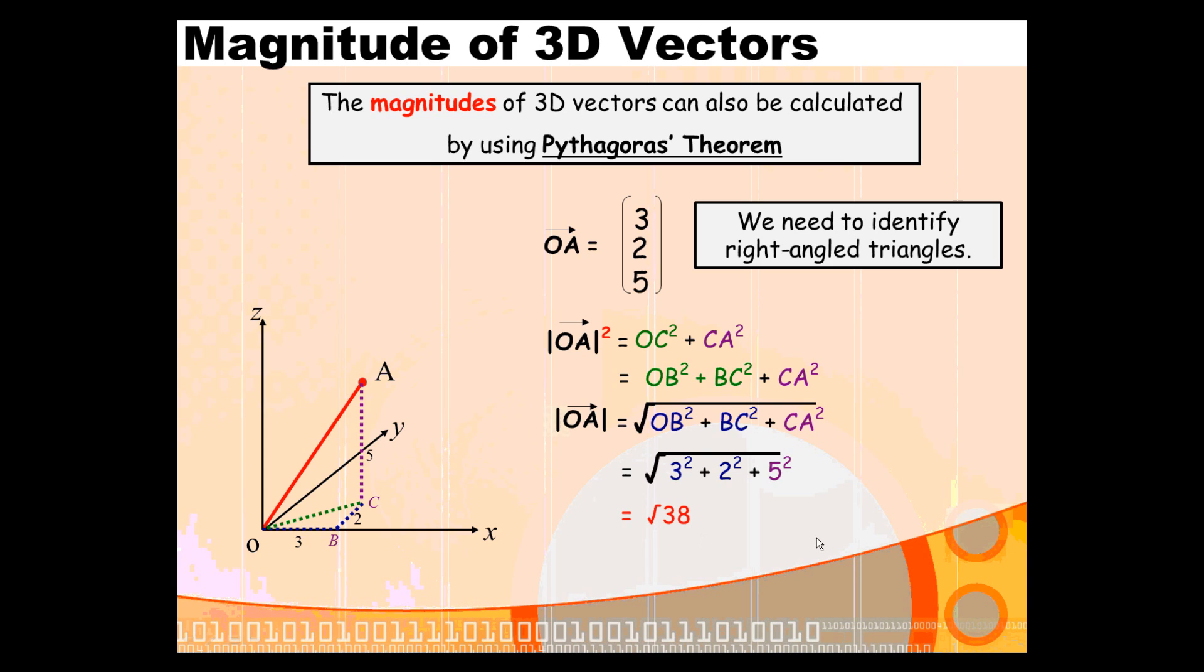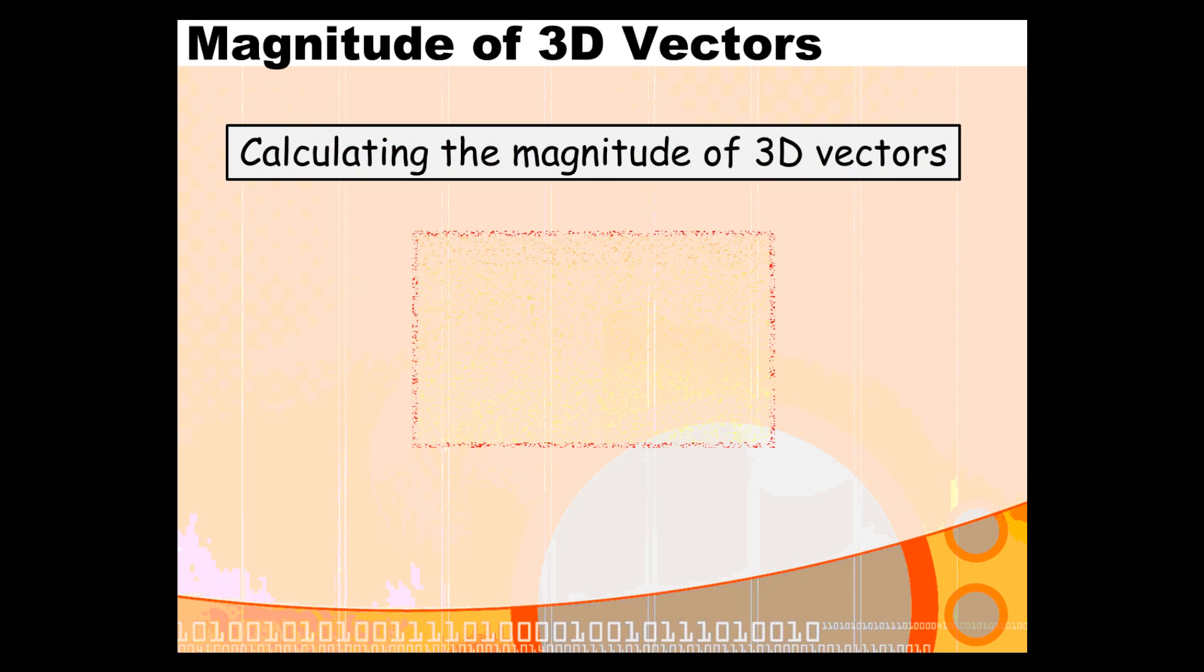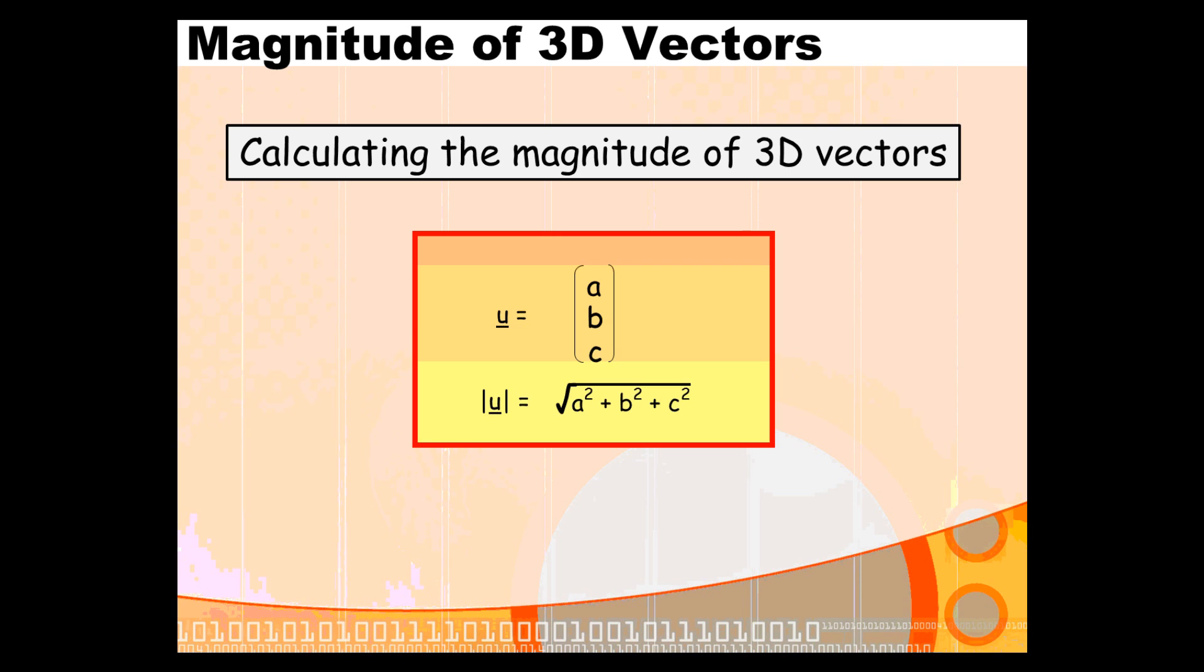Whenever you are faced with a component vector in three dimensions, take each component, square it, add it up together, and then square root the whole thing, and you will find the magnitude. As we said, you are using all three components. Use the components, use Pythagoras, and make sure you use the correct notation when you're working with 3D vectors.